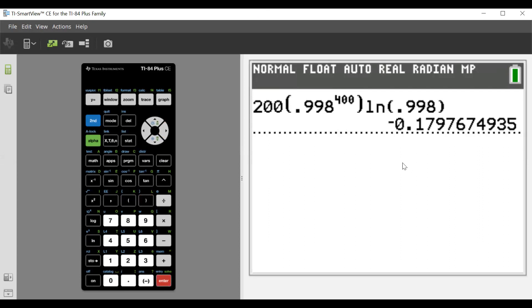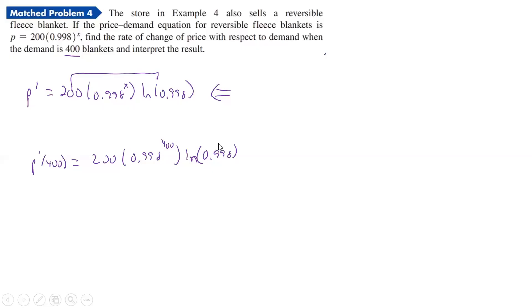And so we get a negative 0.1796 and so on. So let's write that down. Let's just say that's equal to a negative 0.18, and we'll just leave it at that. That's 179 something, but we'll leave it as 0.18. And so now it says interpret.